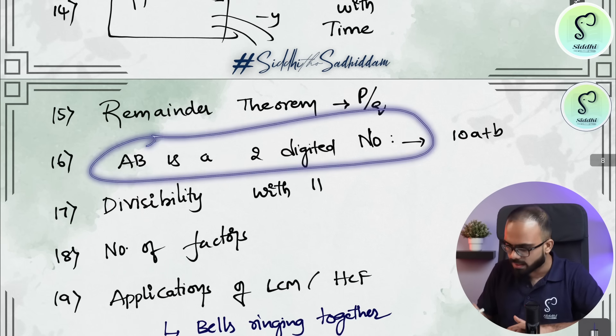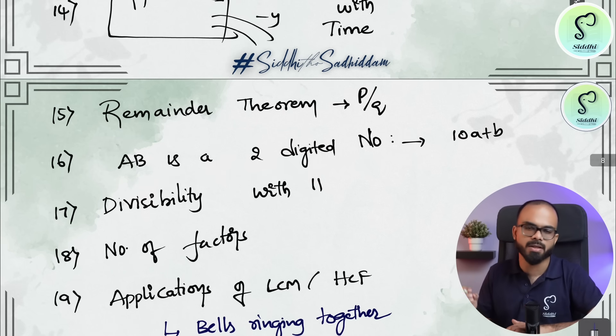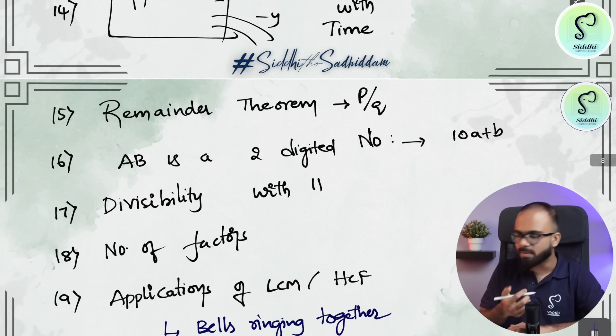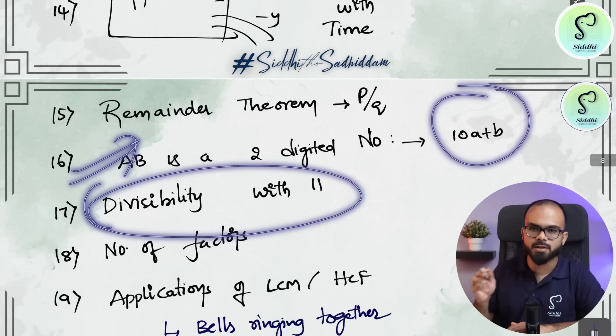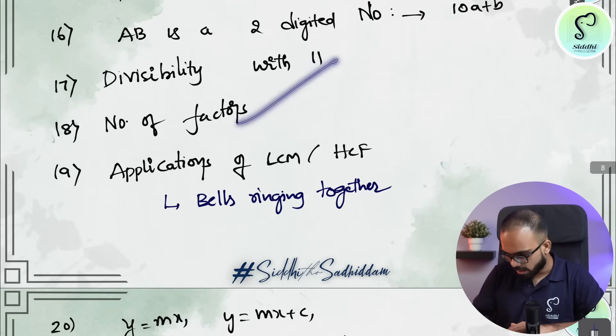Then there are questions which start with AB is a two-digit number. In those questions, you will assume AB as 10A plus B. These kind of questions. Divisibility rule with respect to 11. Number of factors.